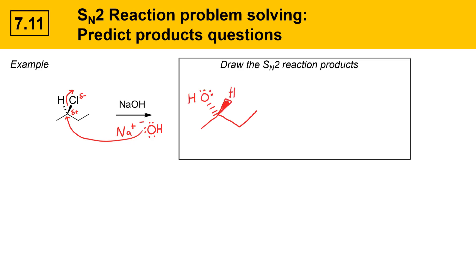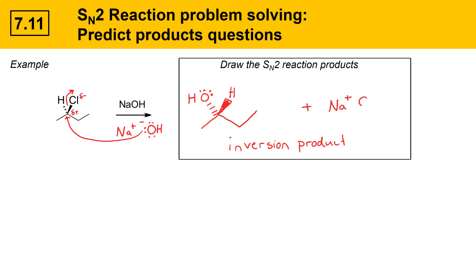The nucleophile has come in from the face opposite where the leaving group left. The hydrogen, which was on a dash before, is now on a wedge. This is an inversion of configuration type product. The other product is the salt, sodium chloride.